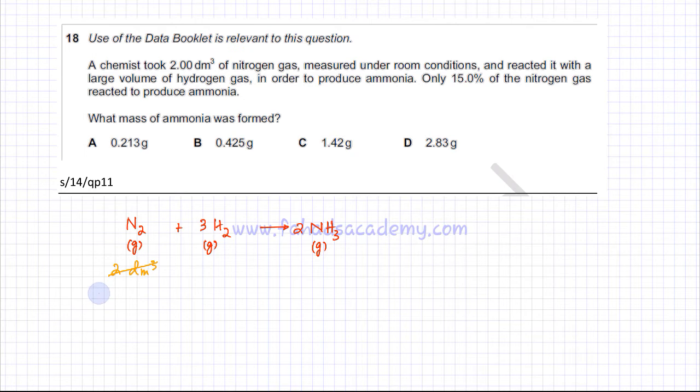So we are going to find out what's 15% of 2 dm³ to figure out how much nitrogen gas has actually reacted. Using our calculator, it's going to be 15 divided by 100 into 2 and this comes out to be equal to 0.3 dm³. So 0.3 dm³ nitrogen gas has actually been used in the reaction.